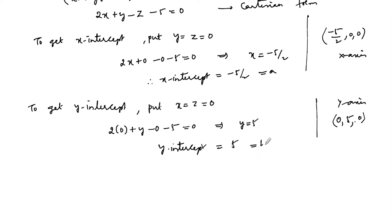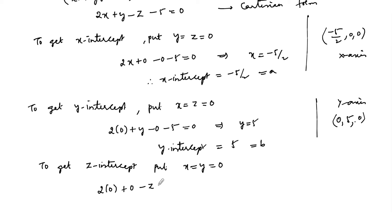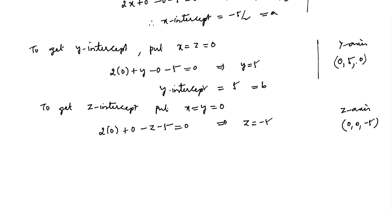Now to get the z-intercept, put x = 0 and y = 0. In the plane equation we have 2(0) + 0 - z - 5 = 0, which implies z = -5. So the point on the z-axis is (0, 0, -5), and therefore the z-intercept is -5. Let us call this c.